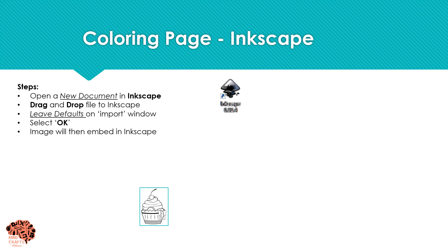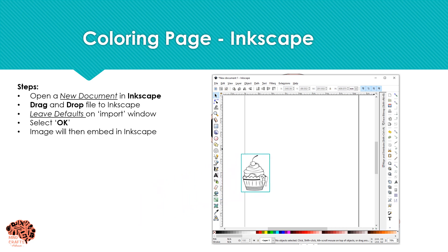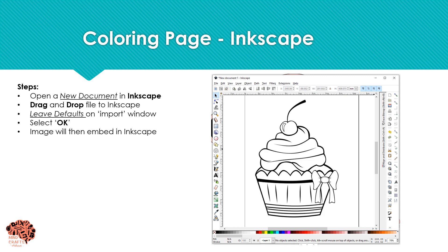After you've saved your file, we're going to open a new document in Inkscape and drag and drop that file into Inkscape. In this import window, you're going to leave all your defaults the same and just click OK. Now our image has been embedded into Inkscape.